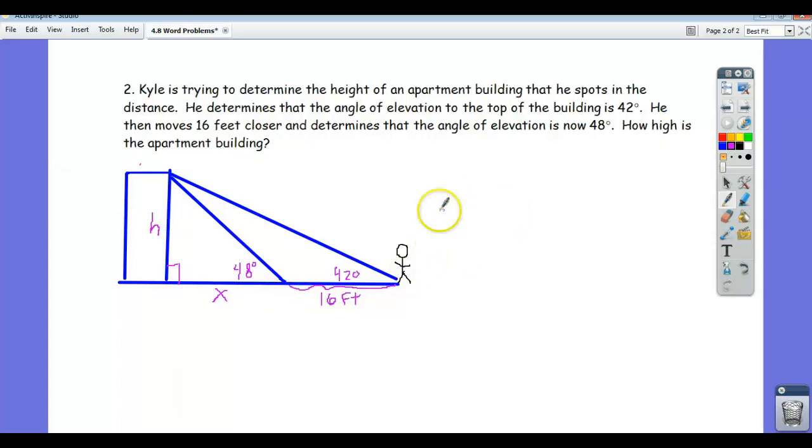So now what? Well, as in the last problem, you'll notice that we have two right triangles. We've got one right here that I'm going to put in yellow, we've got that right triangle.